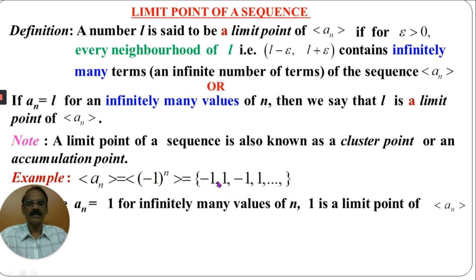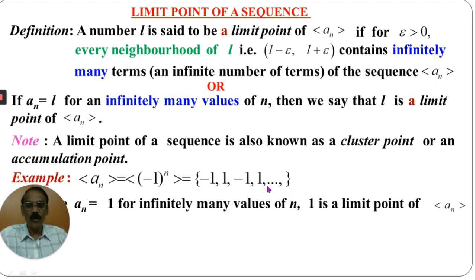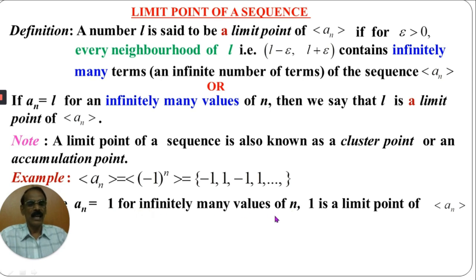If you look at the sequence, the second term is 1, the fourth term is 1 — that is, every even term is 1. How many even numbers are there? Infinitely many even numbers are there. Therefore, AN equals 1 for every even N. It is true for every even number, and therefore AN equals 1 for infinitely many values of N. Hence, 1 is a limit point of AN.